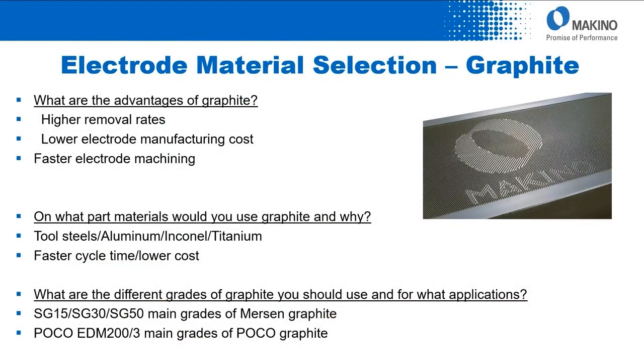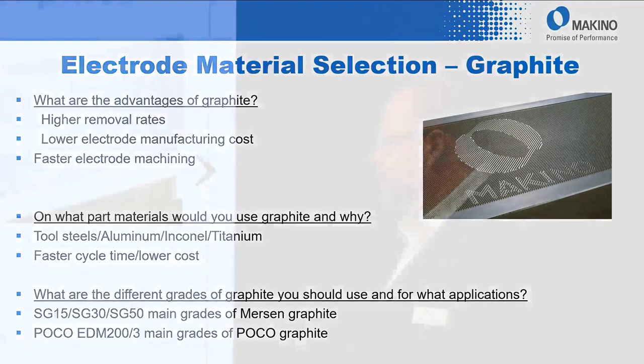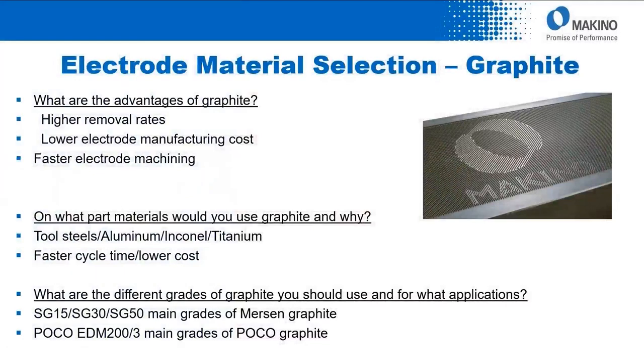What types of parts do we use graphite for? Most commonly, tool steels — H13, P20, very common material. Second, aluminum, though EDM on aluminum has some limitations especially on the aerospace side. Inconel is great for aerospace parts. For titanium, graphite is really your only electrode material to machine it effectively — copper can work but gives very poor cycle times and poor wear. And graphite is lower cost, saving both time and money.